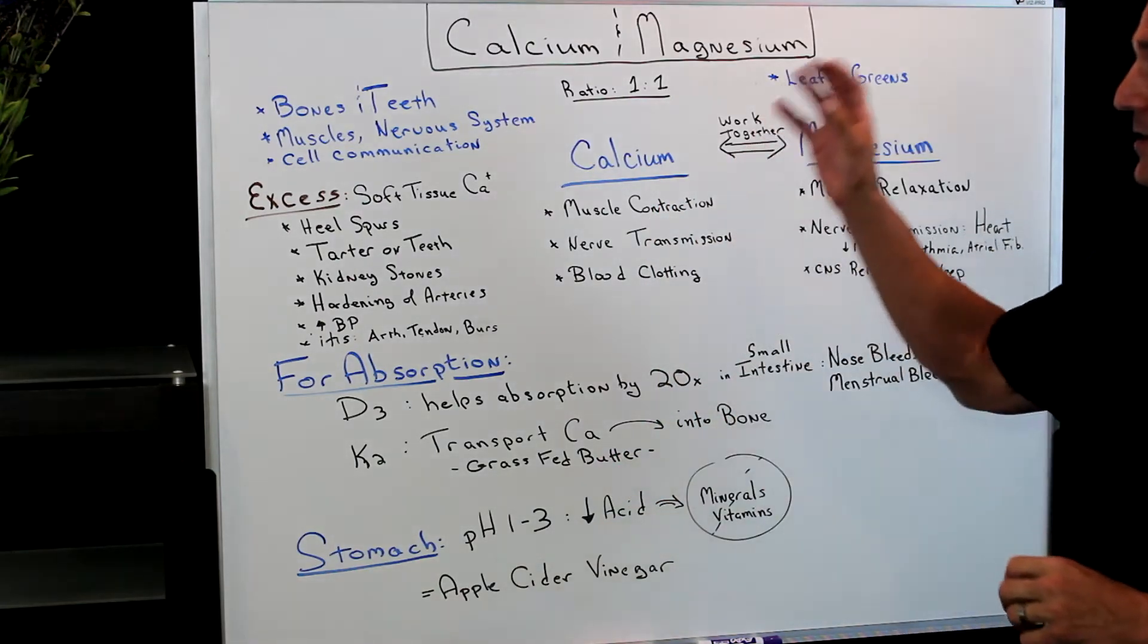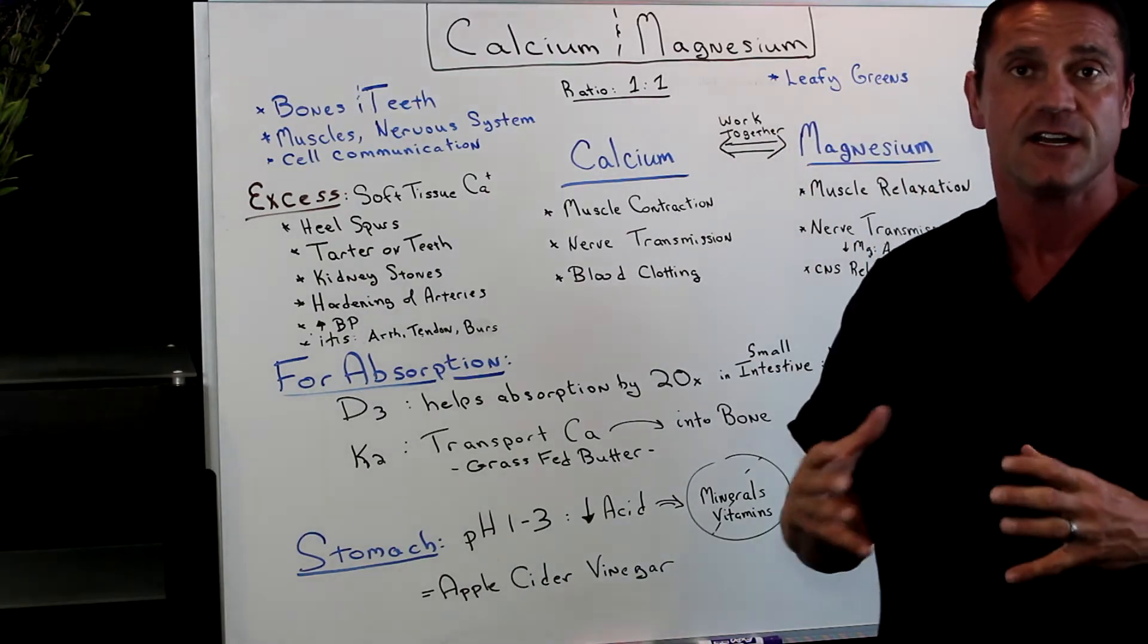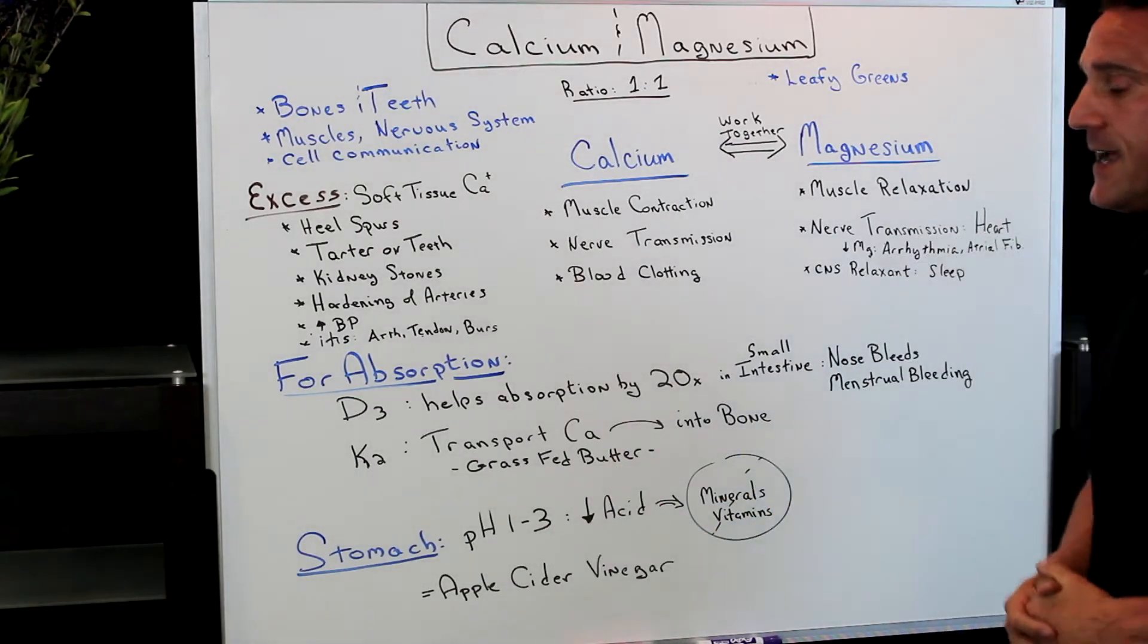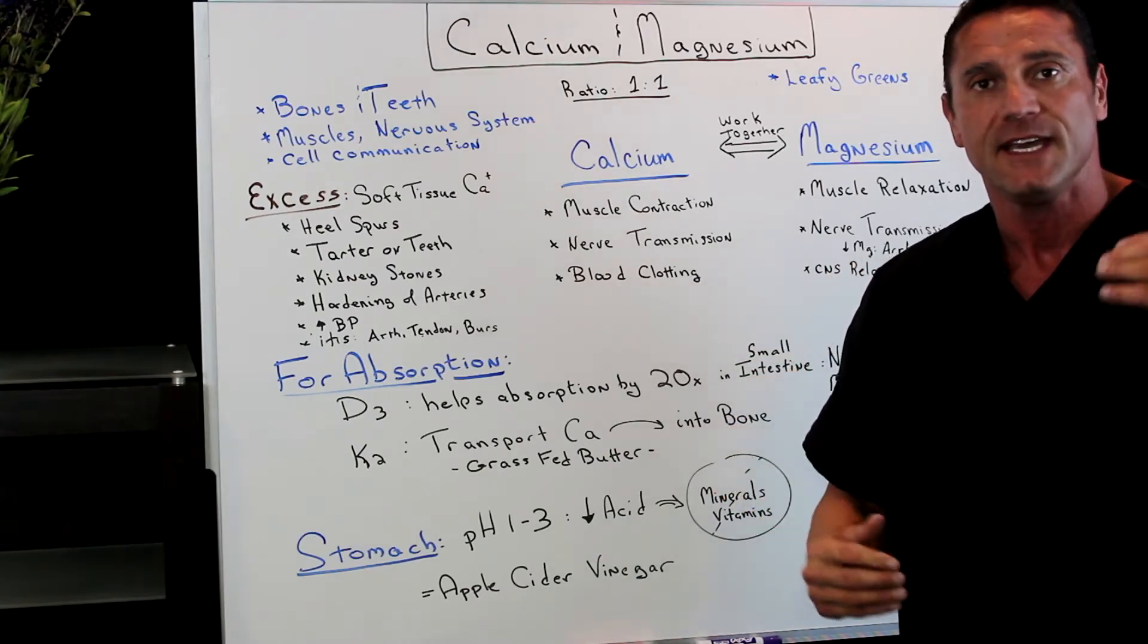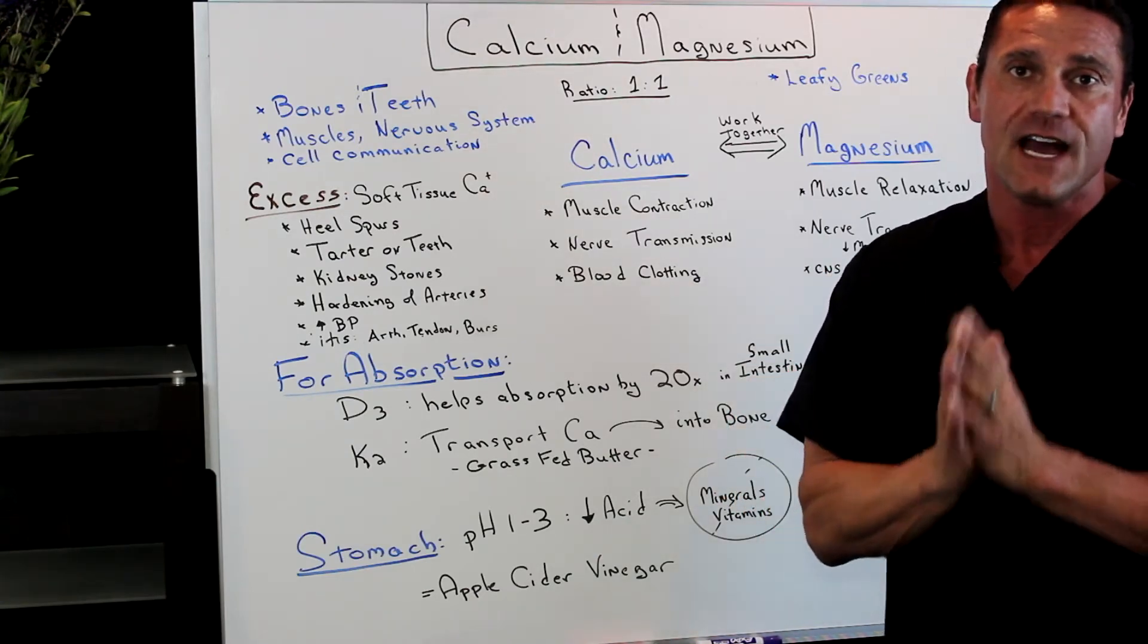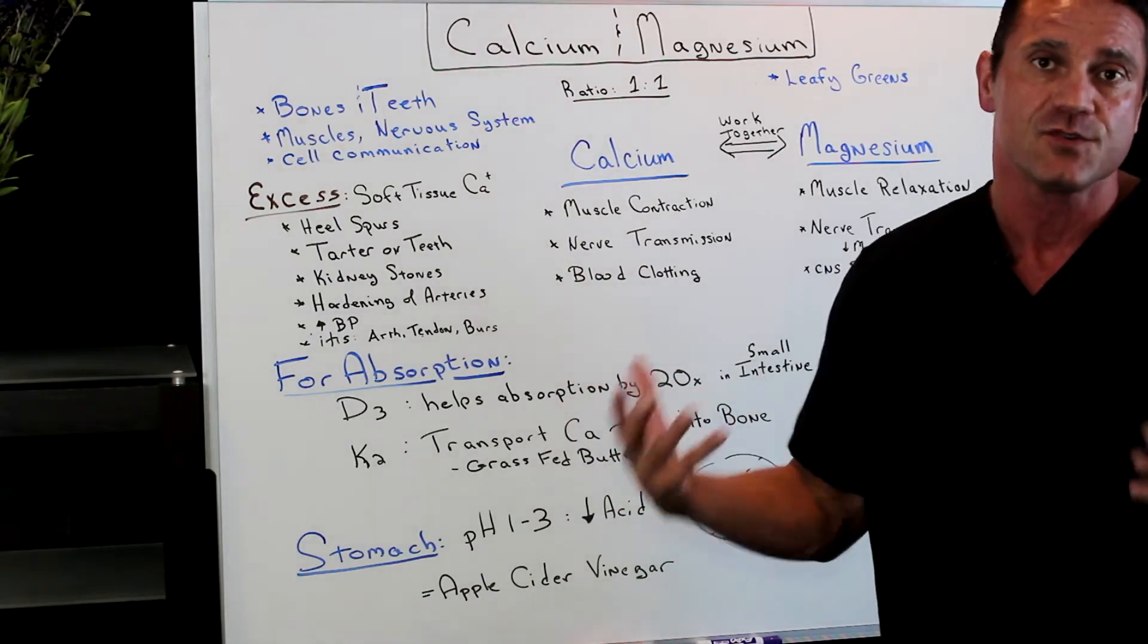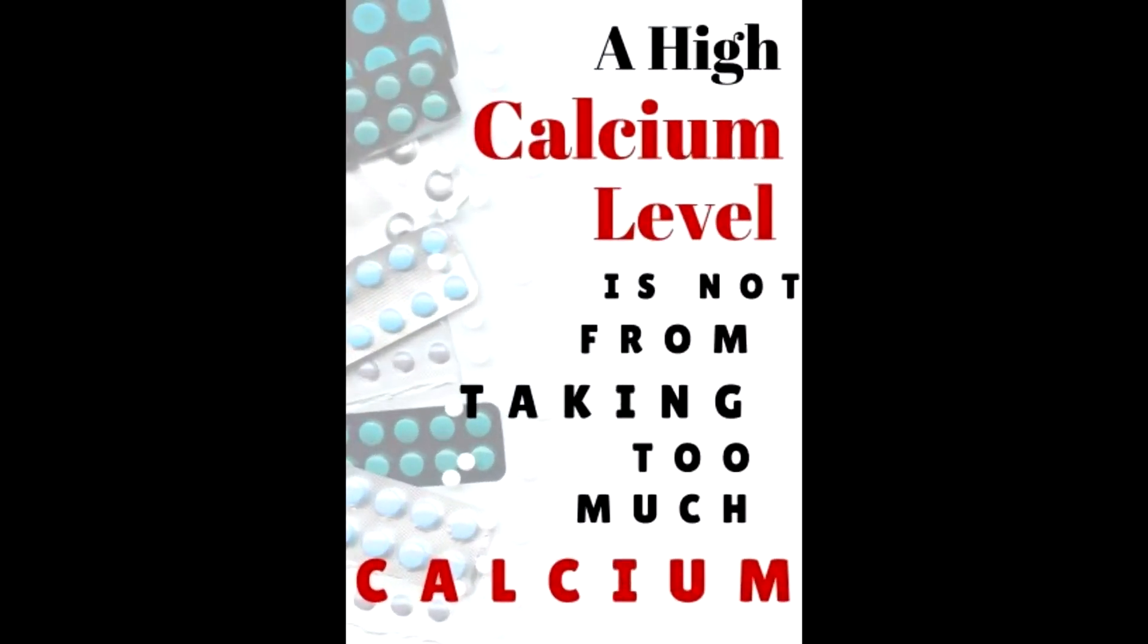Magnesium, most people are deficient in magnesium because they're not taking enough leafy greens. Magnesium is high in leafy green vegetables. Now, the most important thing, the reason why you have too much calcium in your system is not because you're taking a lot of calcium. It's because it's not being properly absorbed in your small intestines for utilization. How is that done?